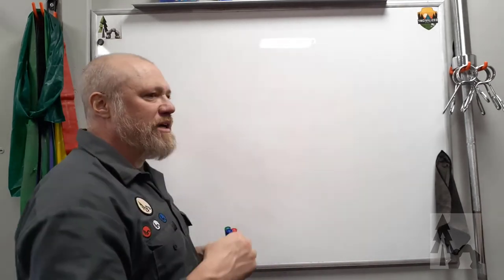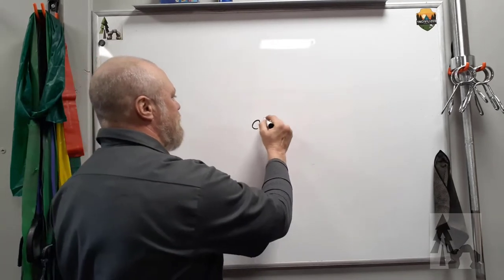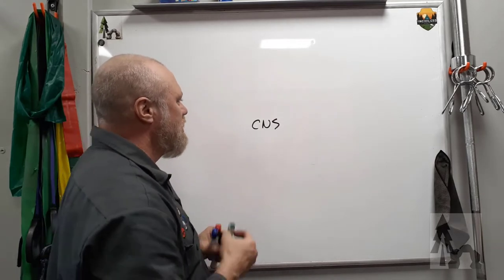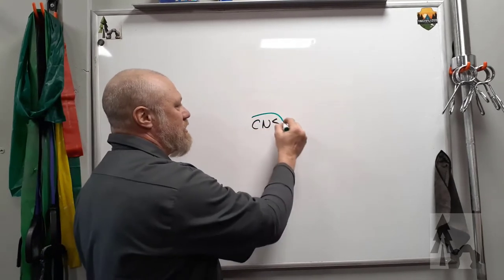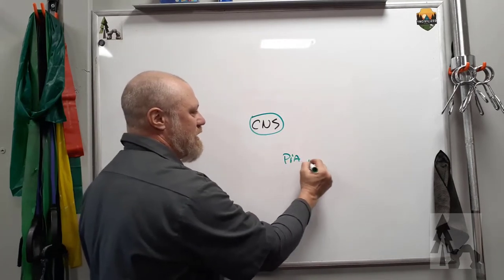A meninges is a covering. There are three meninges, three layers around your central nervous system. So you've got your central nervous system, your brain and your spinal cord. You've got a thin protective layer that's adhered right to the surface of the CNS, and that is your pia mater.